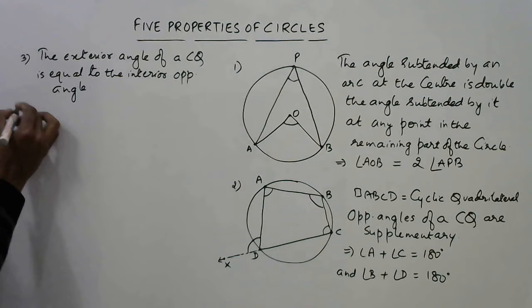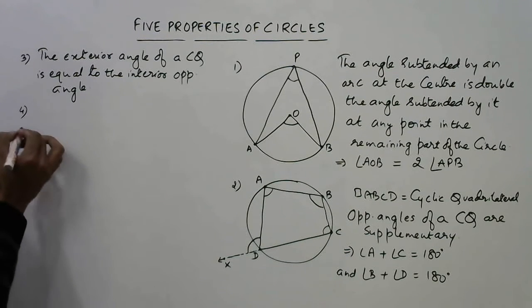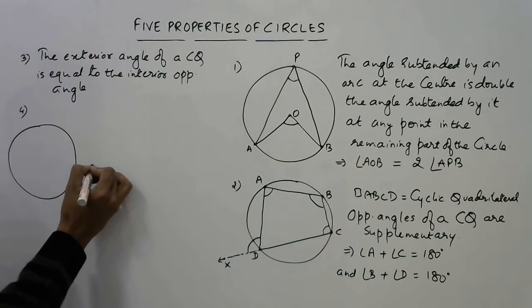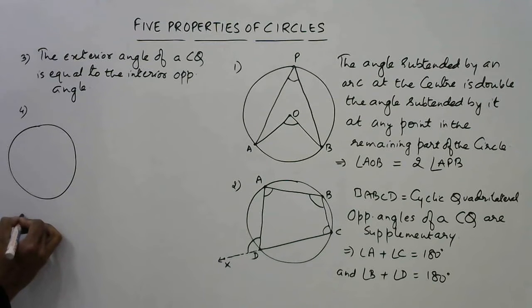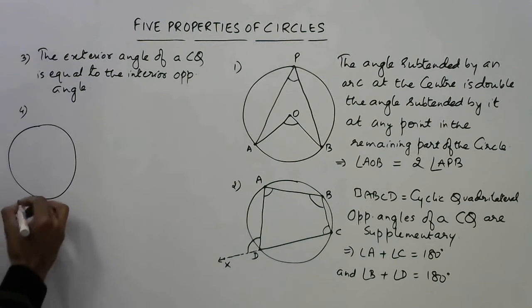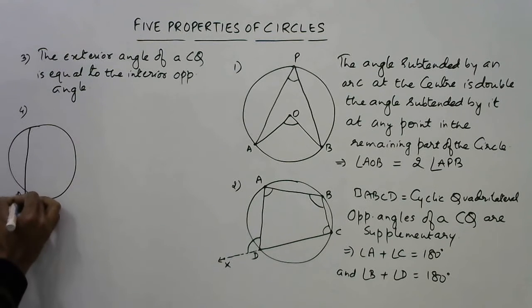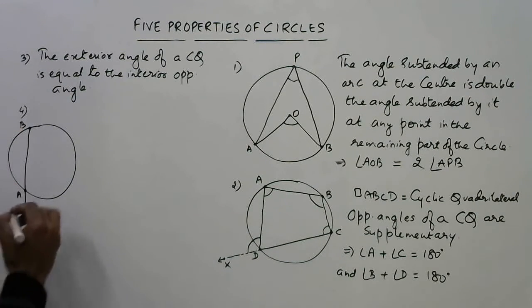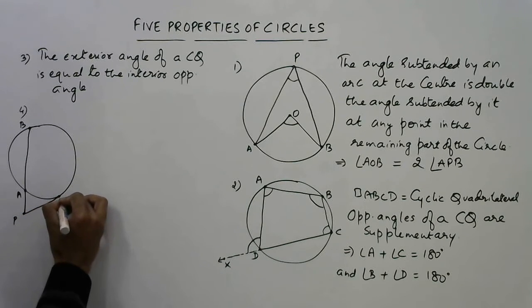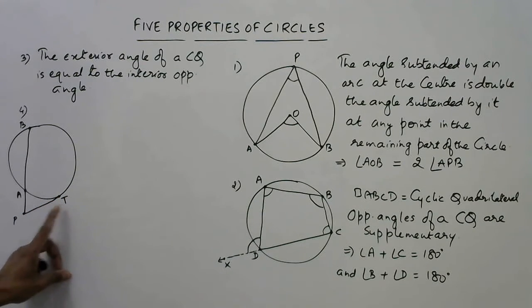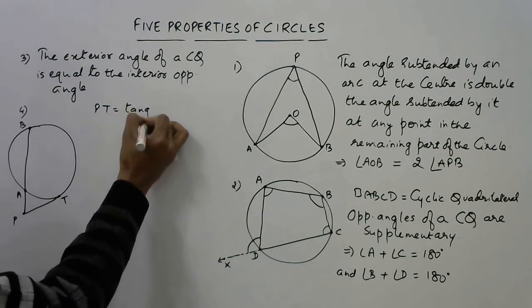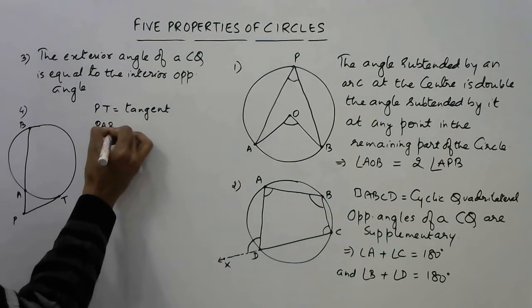Now come to some tangent properties. In a circle, suppose I take a point P outside the circle and I draw a secant PAB. A secant is a line which cuts the circle at two points, and this is a tangent PT, where T is the point of contact. So PT is the tangent and PAB is the secant.